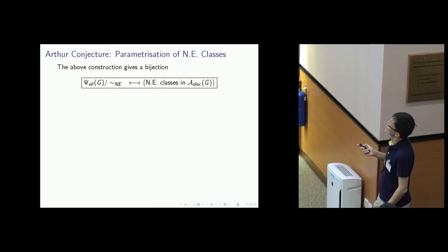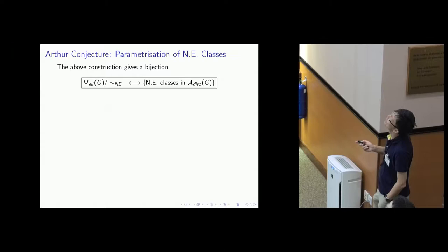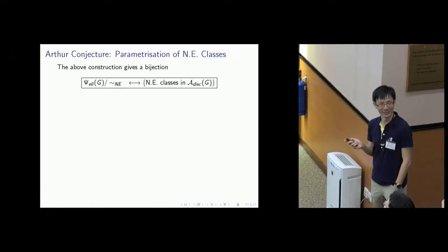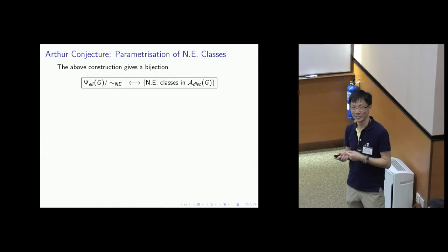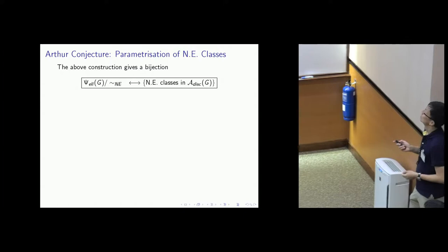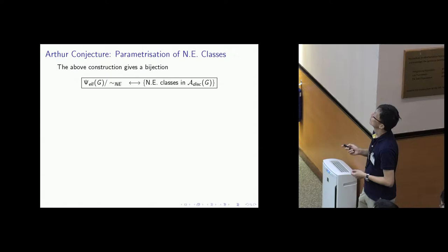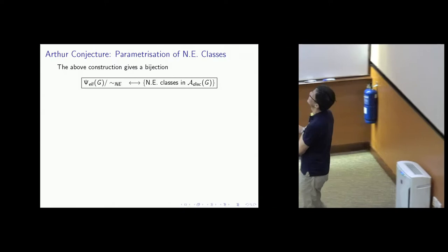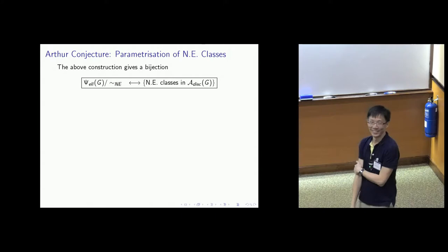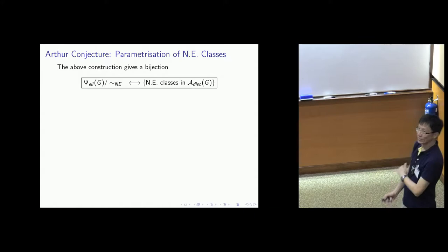That explains how, starting from a global A-parameter, I get a near equivalence class of representations. To specify a near equivalence class, you just have to tell me what they look like at almost all places. I have done that by giving you a collection of unramified representations. So the above construction gives a bijection from elliptic... This is the conjecture — the first statement of the conjecture. The problem has two parts, right? One is to give a meaningful parameterization of the near equivalence classes that occur in the automorphic discrete spectrum. The conjecture says that the above construction gives a bijection between near equivalence classes in A_disc(G) by elliptic A-parameters modulo near equivalence.